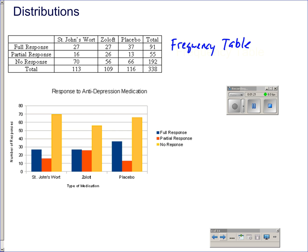This frequency table can also be called a two-way table because you have variables coming from each direction. So it's a two-way table. It's a frequency table because you've got the frequency of a particular response in the cells in the table. Then we can take that information and make it into a graph like the one you see here.